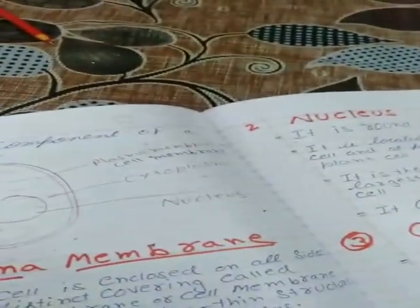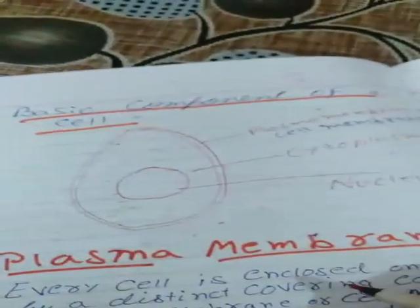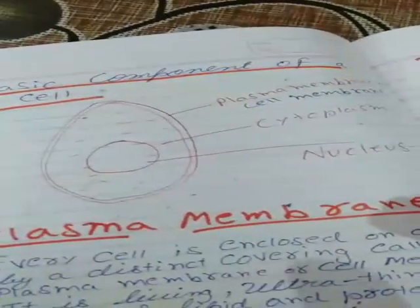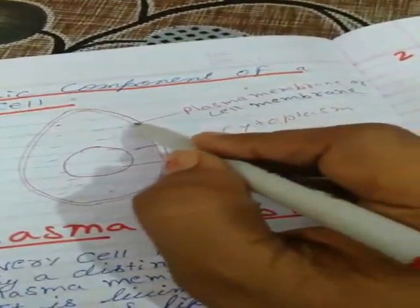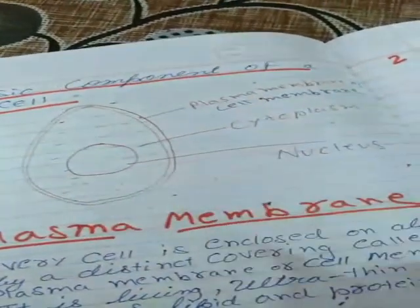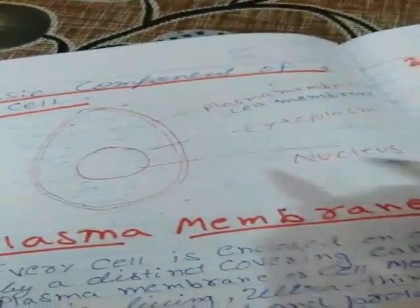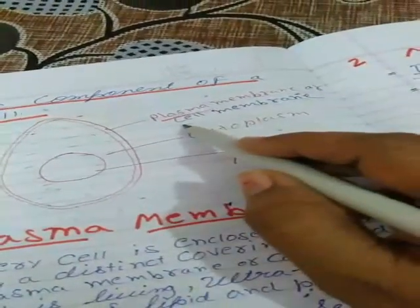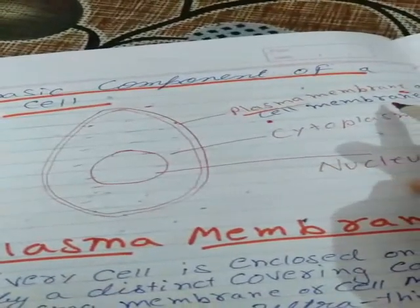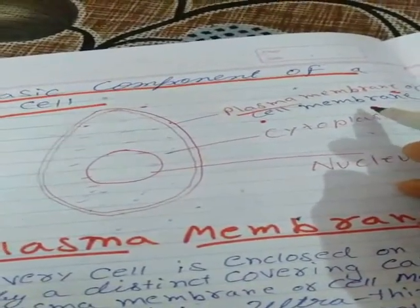Now, the basic components of the cell. The main components of the cell — cell is having a membrane-bounded structure, and the membrane is called the cell membrane or plasma membrane. It is also called the selective permeable membrane or semi-permeable membrane.